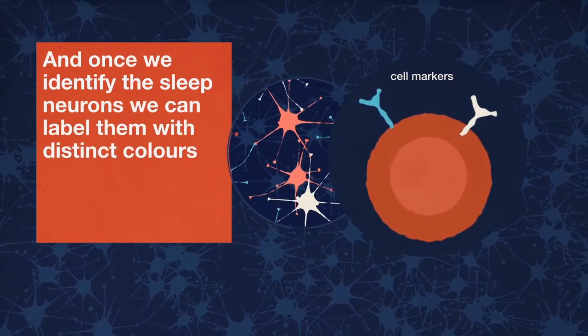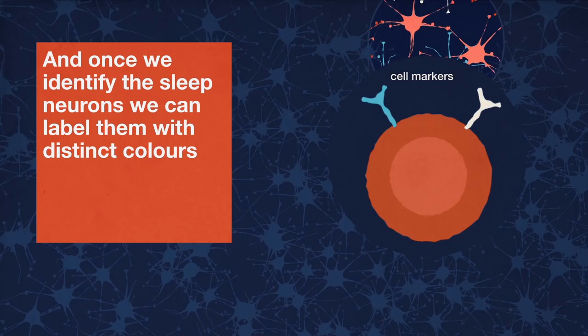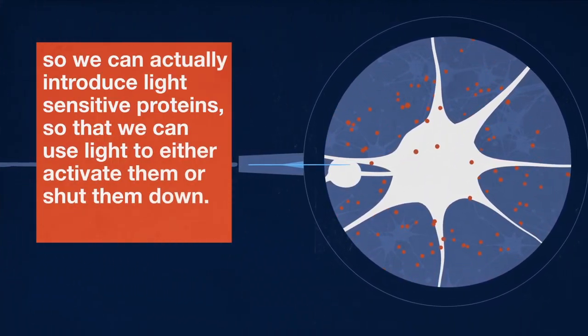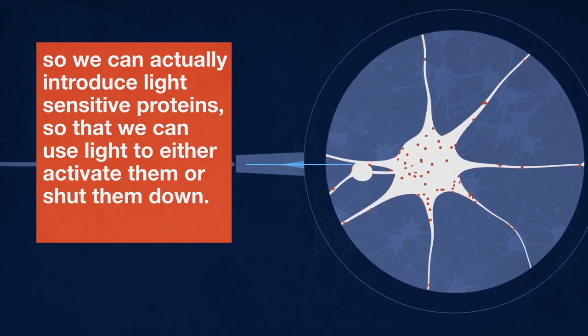And once we identify the sleep neurons, we can label them with distinct colors so we can actually introduce light-sensitive protein so that we can use light to either activate them or shut them down.